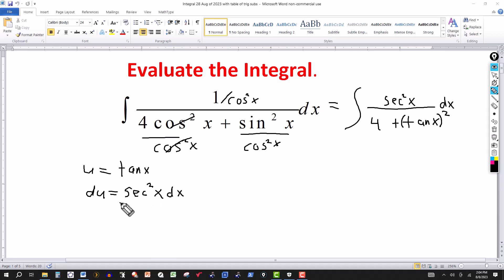So I know then that secant squared of x dx can be replaced by du. So right here I've got secant squared dx. So in the numerator that can be replaced by du.